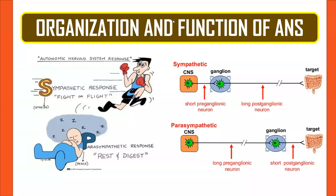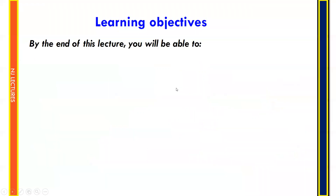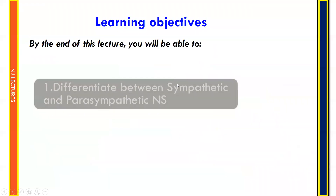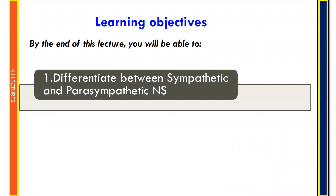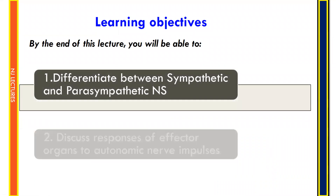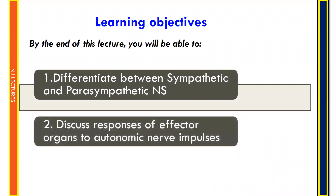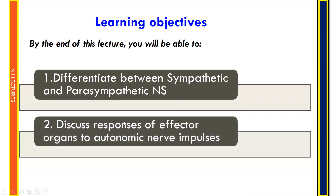Today's lecture is on Organization and Function of the Autonomic Nervous System. At the end of this lecture, you will be able to differentiate between sympathetic and parasympathetic nervous system and discuss responses of affected organs to autonomic nerve impulses.